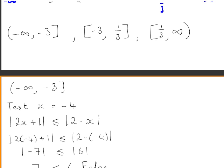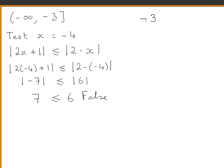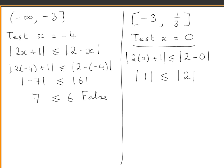We test the next interval, minus 3 to one third, using x equals 0. Substituting into the original inequality gives the absolute value of 1 less than or equal to the absolute value of 2, which gives 1 less than or equal to 2. This is true, so our solutions do lie within this interval.